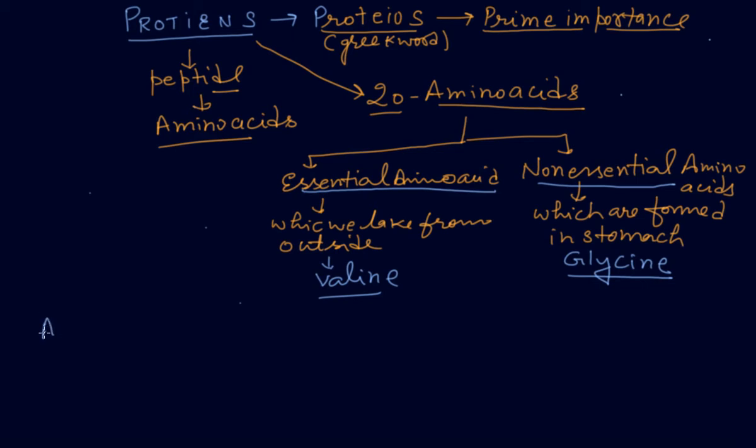As I told you earlier, one amino acid joins with another amino acid and they will form a peptide. Peptides will react with each other, combine with each other, and form the protein. Now you see, I'm just going to write one amino acid.